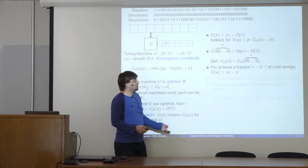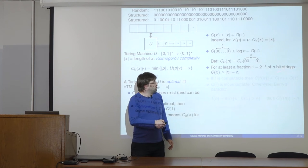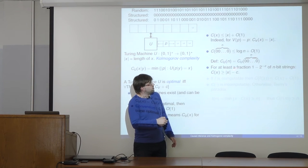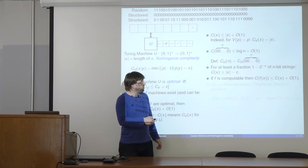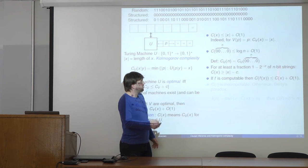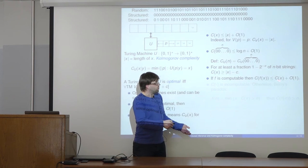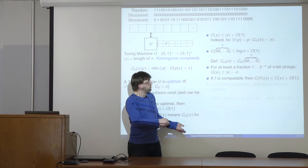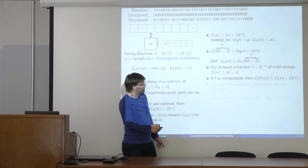Most strings are random — at least a fraction 1 minus a small amount of all n-bit strings have complexity at least length of X minus some constant C. If a function F is computable, then the complexity of F(X) is at most the complexity of X plus a constant. The machine first simulates the program on the optimal machine, then computes F on the output. The constant depends on the function.